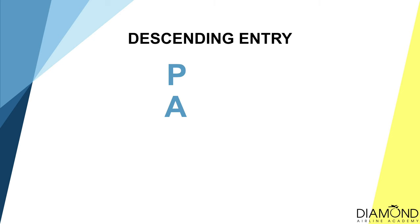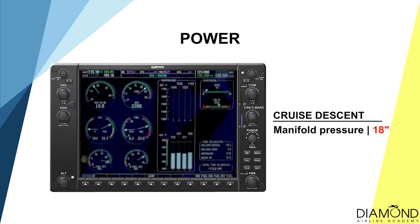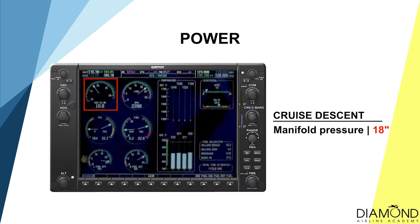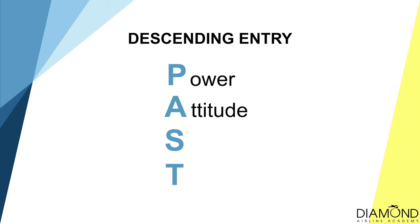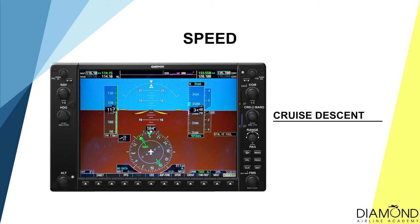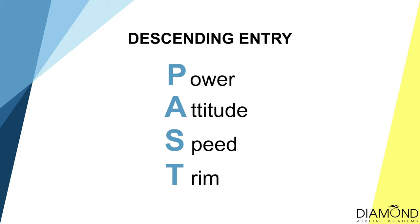After the entry cycle for climbing, we'll talk about the entry cycle for a descending turn: P, A, S, T. P is Power — reduce manifold pressure to 18 inches. A is Attitude — five fingers. S is Speed — approximately 110 to 120 knots. T is Trim — to initiate the descent, push the stick forward, then trim forward until hands-off state.